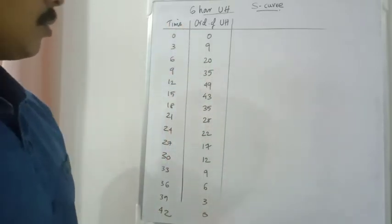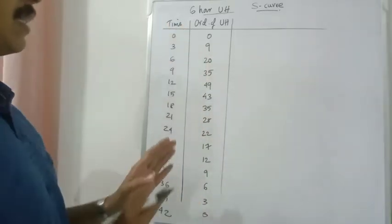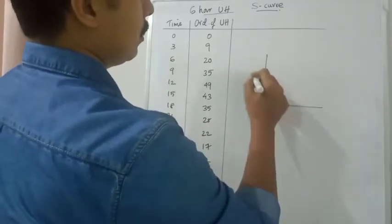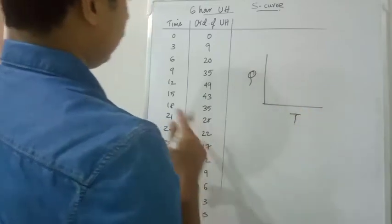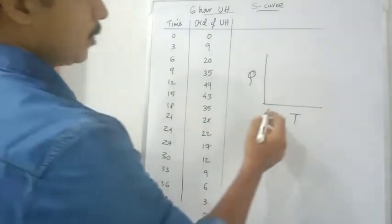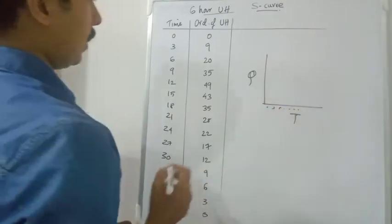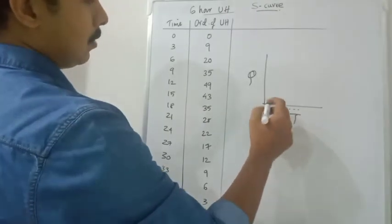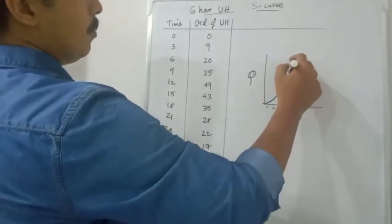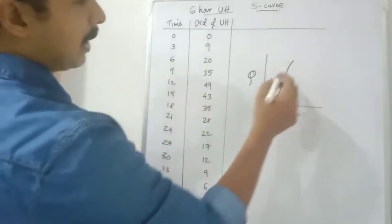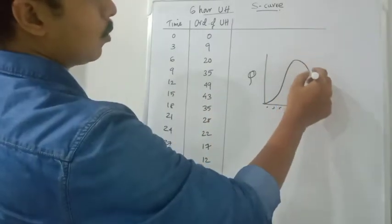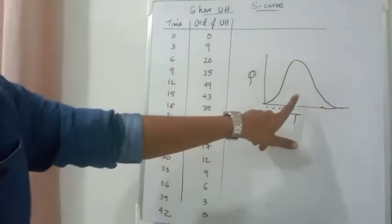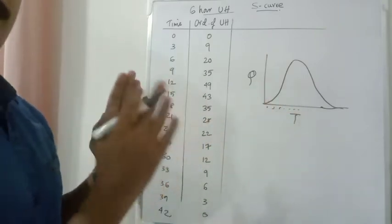We have a graph from the last class. The X-axis goes 0, 3, 6, etc. The Y-axis values are 0, 9, 20, and so on. We are going to work with two columns. There is a peak around 49, then it lowers down and approaches zero again. This is the unit hydrograph of a particular catchment area.